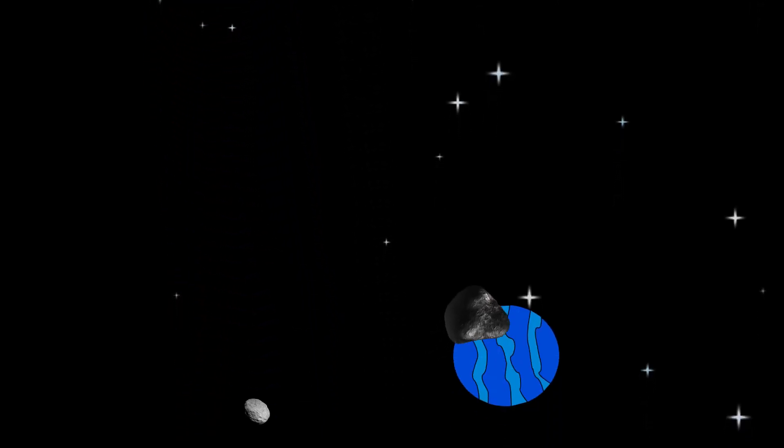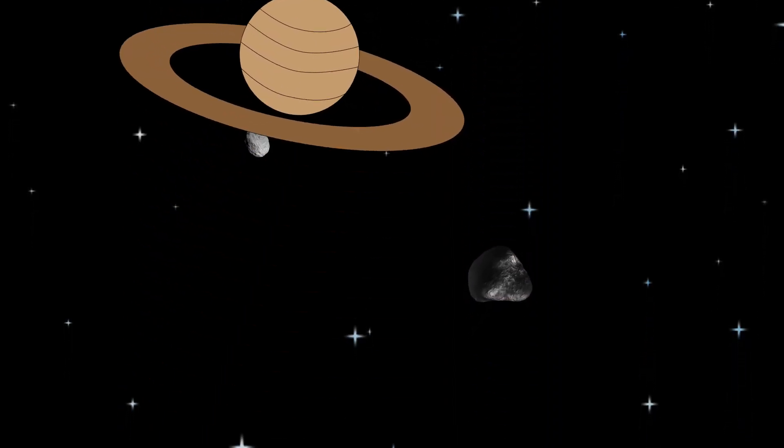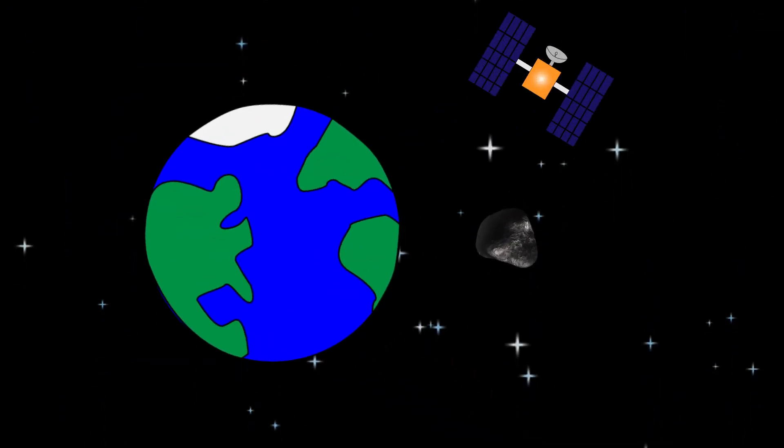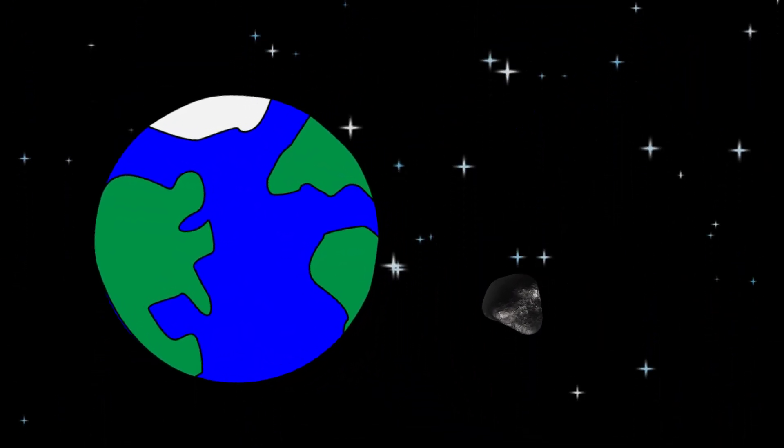Our solar system is filled with asteroids. While most like to hang out in the asteroid belt, roughly between the orbits of Mars and Jupiter, many have orbits that come close to, or sometimes even impact, Earth.